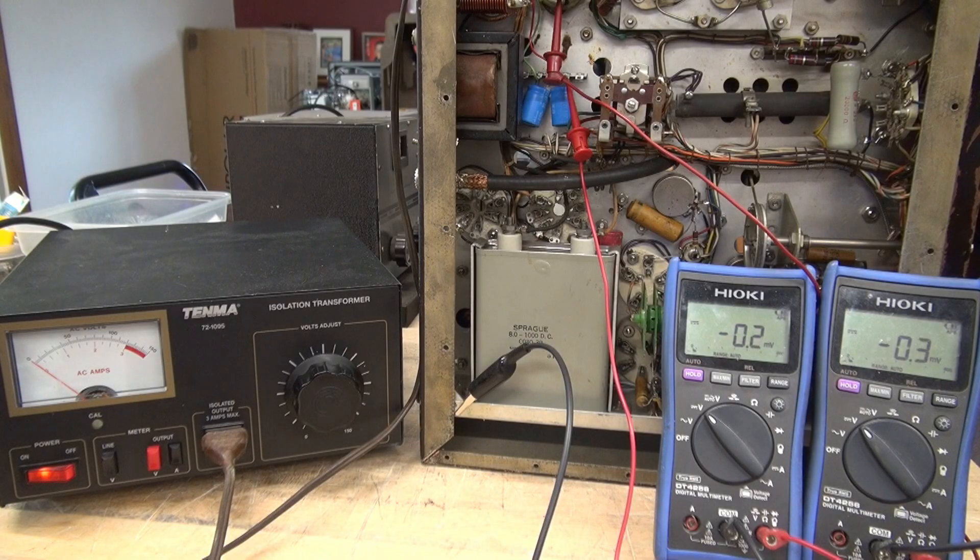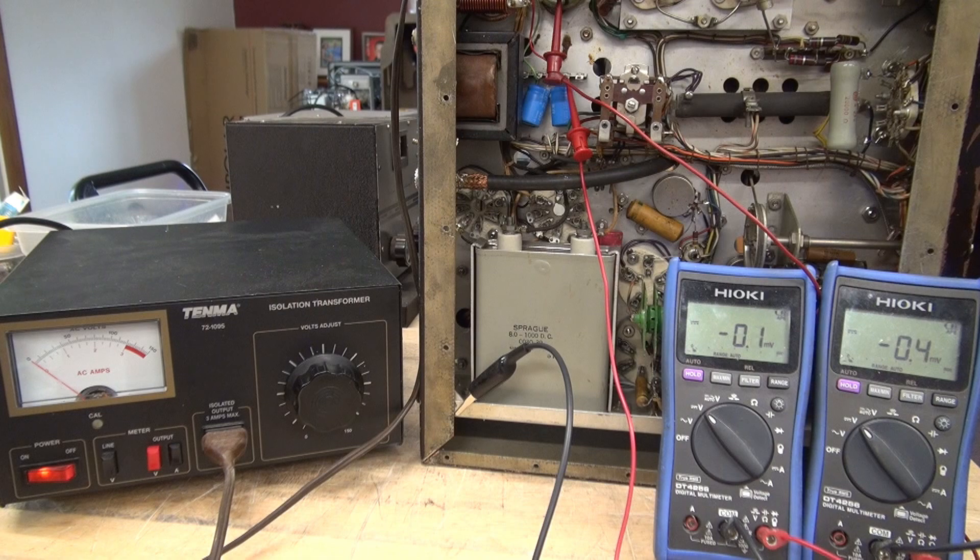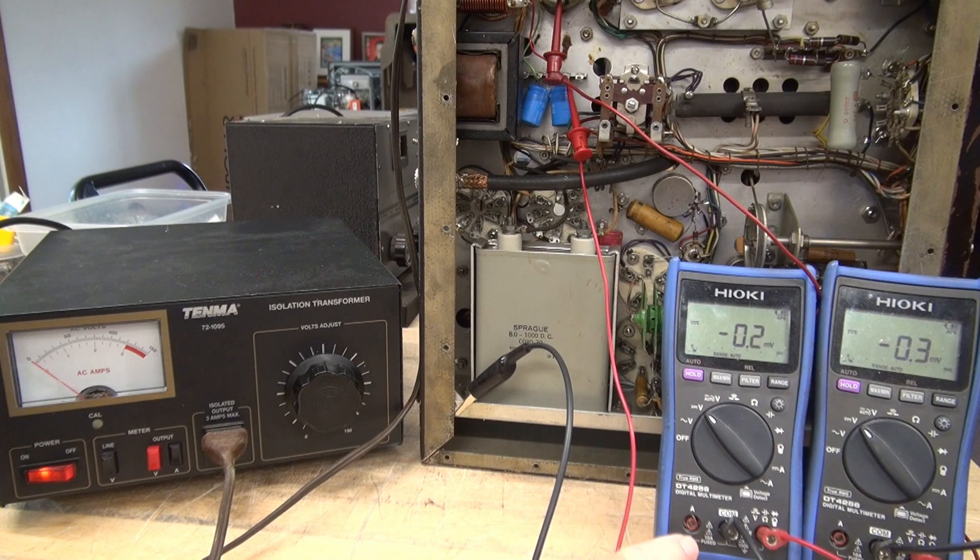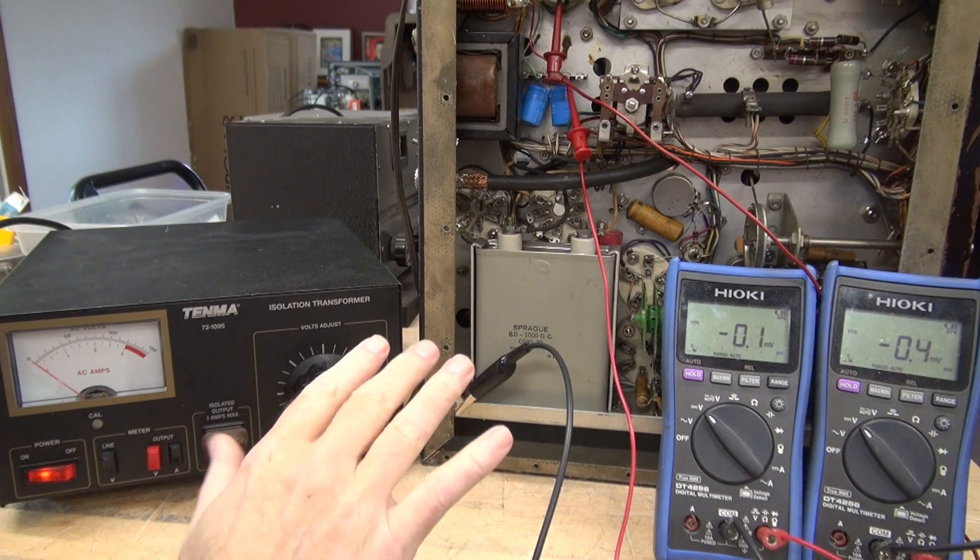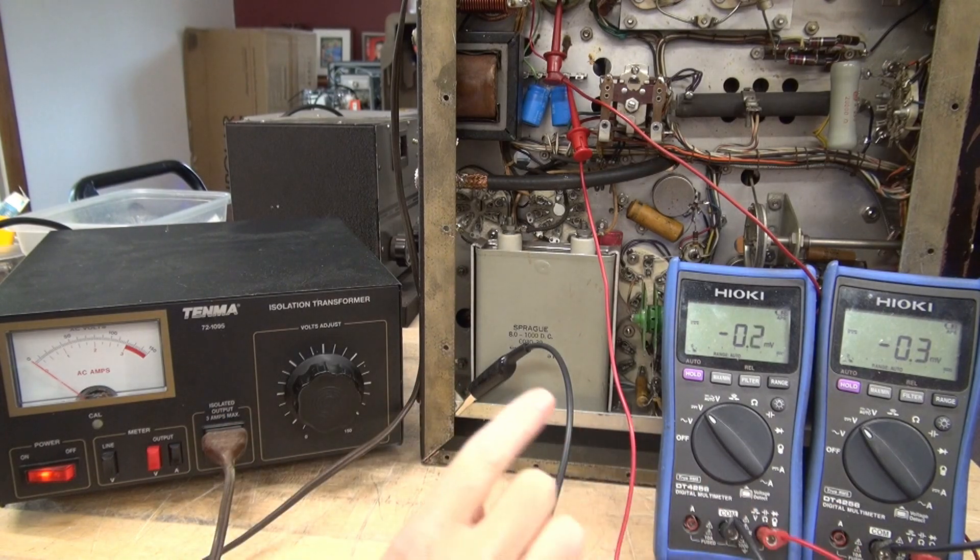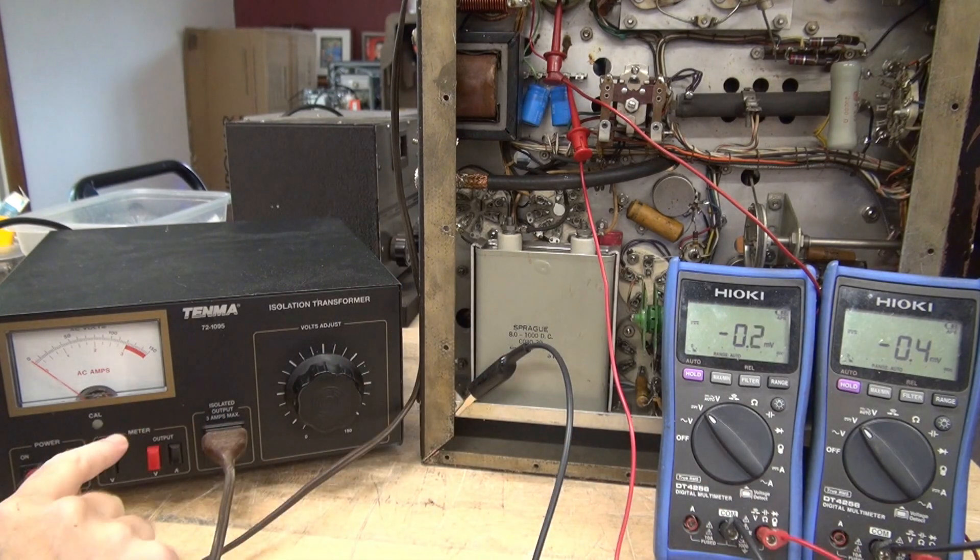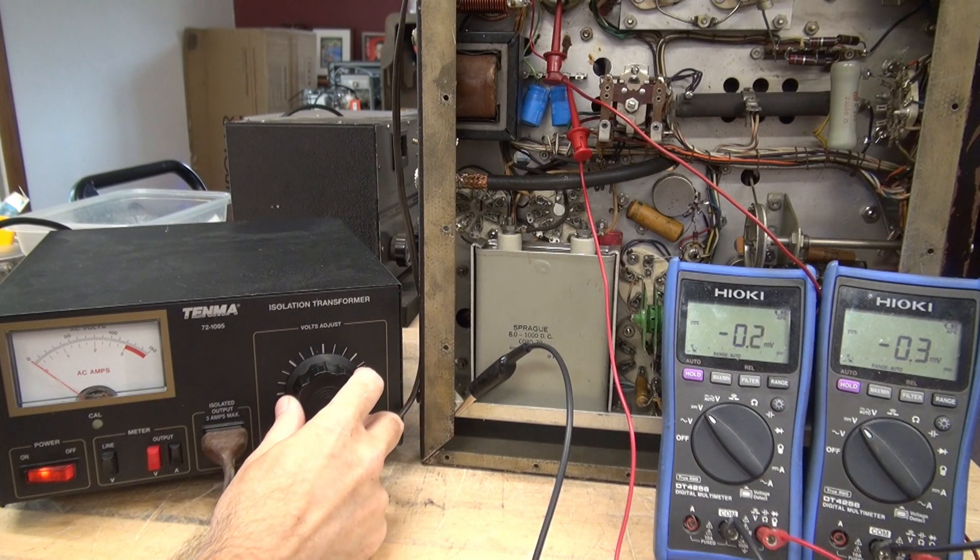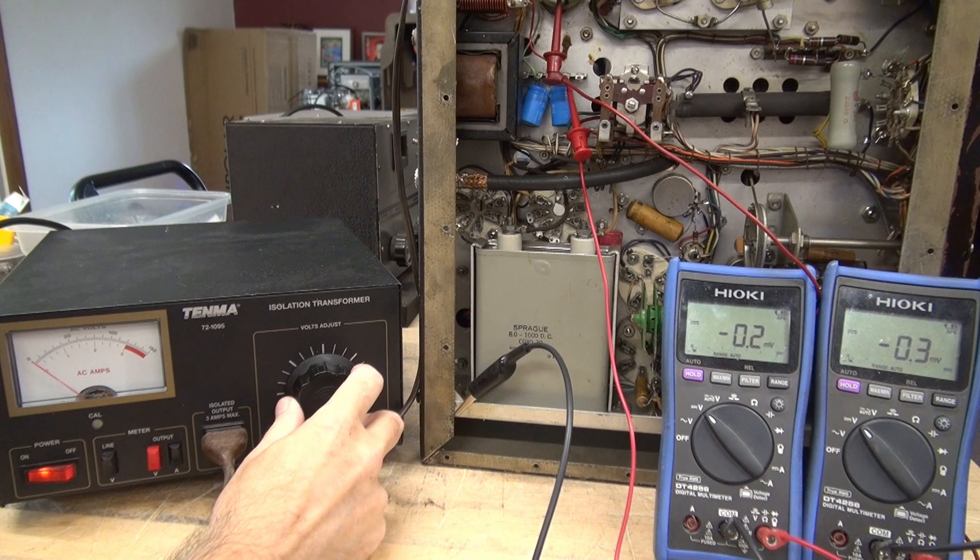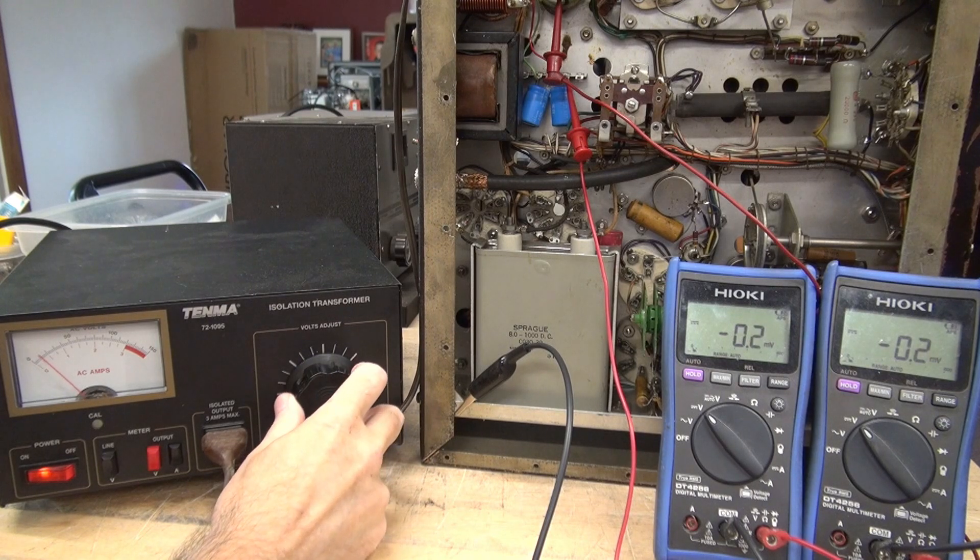So in this video we're going to test the power supplies of the Johnson Viking 2 CDC. This meter is monitoring the low voltage DC as they call it which is around 350 volts. This one is monitoring the negative voltage. I'm going to bring the transmitter up on a variac. I do not have the 5R4s installed so high voltage is not being tested. We're just looking at the other power supplies.